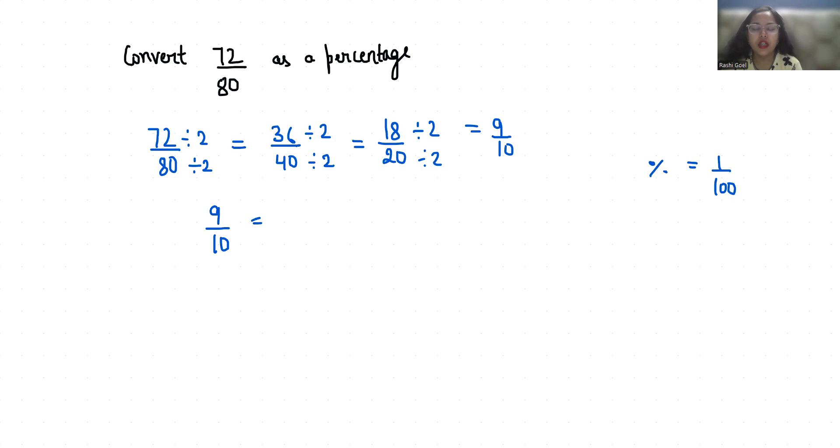Now we need 100 in denominator but we have 10. So to make it 100 I'm going to multiply it by 10 in numerator as well as in denominator.